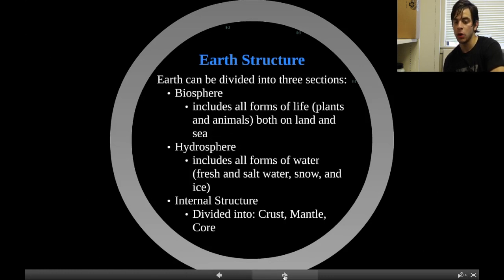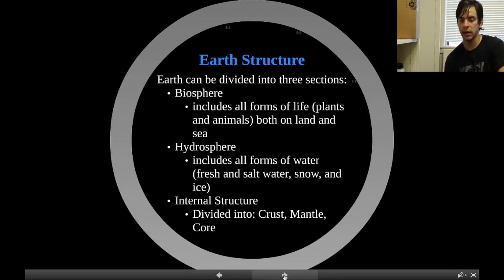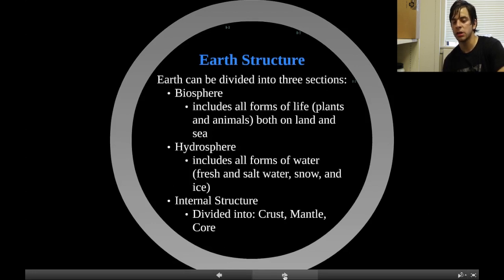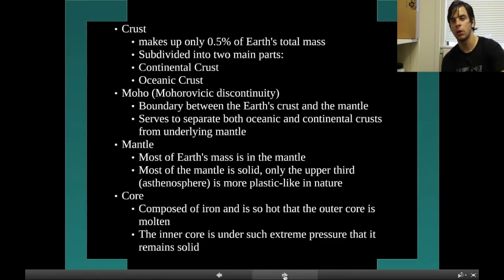Earth structure. Earth can be divided into three sections: the biosphere, the hydrosphere, and internal structure. The biosphere includes all forms of life — plants and animals both on land and in the sea. The hydrosphere includes all forms of water — fresh and salt water, snow, and ice. The internal structure is divided into three: the crust, the mantle, and the core.